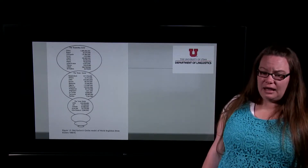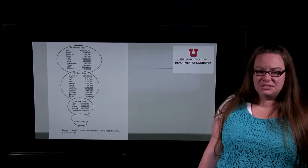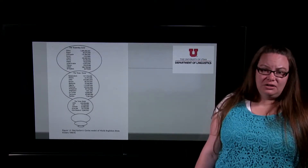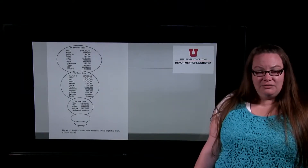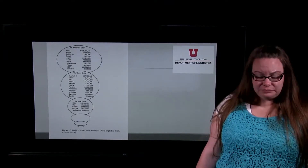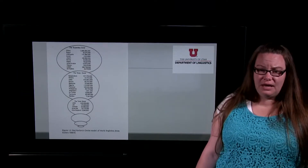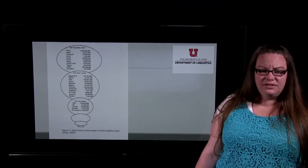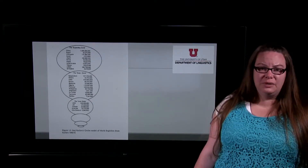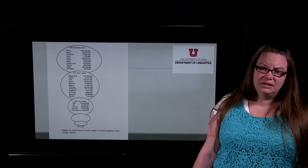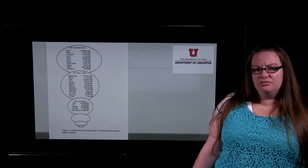The model I most prefer is the circle model — you've probably already guessed that from how our course is set up. The inner circle has what I'd think of as the oldest Englishes. British English, of course, was the first. All of those listed in the inner circle are places where English is the primary language spoken by the majority of people. It doesn't mean it's everyone's first language, but a majority learn it as their first language.